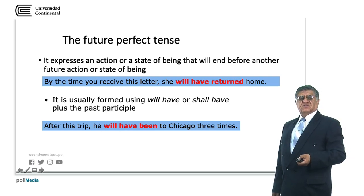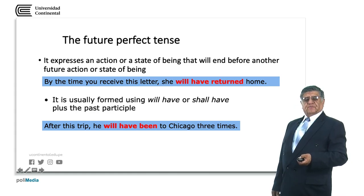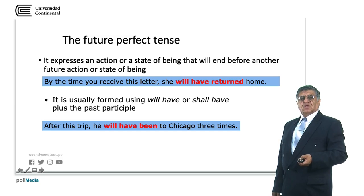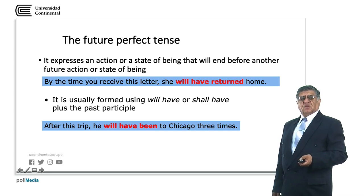After this trip, he will have been to Chicago three times. Again, we have the auxiliary will, the other auxiliary have, and the main verb in the past participle form. In the previous example, returned is the past participle form.